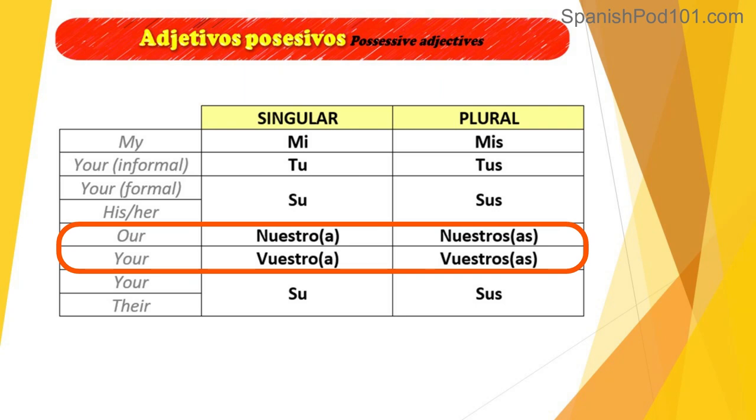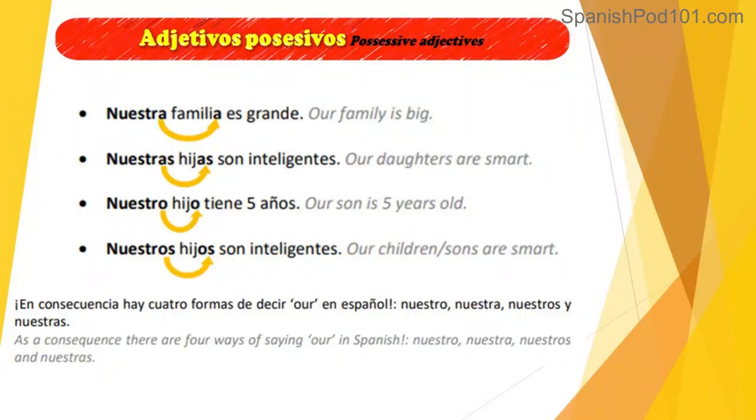Something extremely important about possessive adjectives in Spanish: we are not matching the subject or the person speaking — we are matching what we are possessing. We match in number and also in gender what we possess or the relationship we want to establish. Let's have a look at some examples so you can see exactly what I mean.